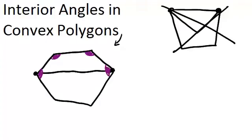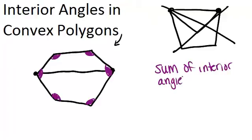So the first thing we're going to talk about is how to figure out the sum of the interior angles for a convex polygon. In order to do this, we're going to break our convex polygon up into triangles, because we already know the sum of the angles in a triangle is 180 degrees. And we're going to try to use this fact to figure out the sum of the interior angles for other polygons.